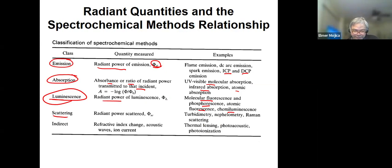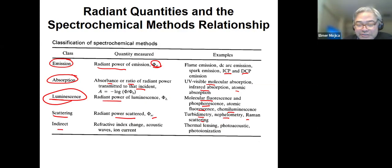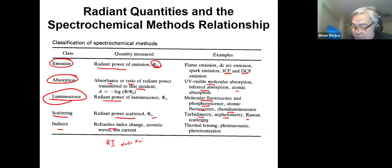For scattering, it's a radiation power that is scattered — this has something to do with Raman, nephelometry, and turbidimetry. Then you have an indirect one — other methods that indirectly involve spectrochemical phenomena: refractive index change — the basis of the RI detector in HPLC — acoustic waves, and ion current, covering thermal lensing, photoacoustic, and photoionization.